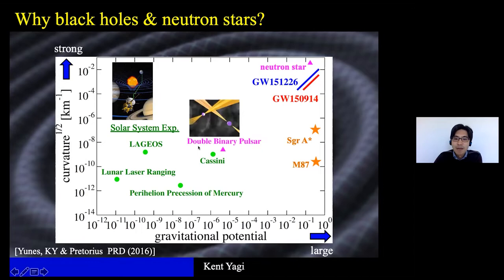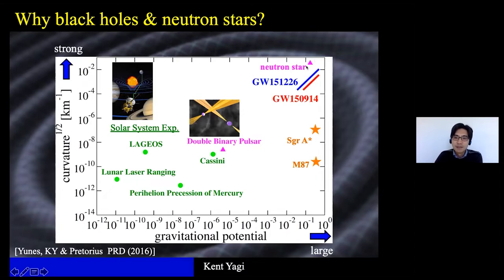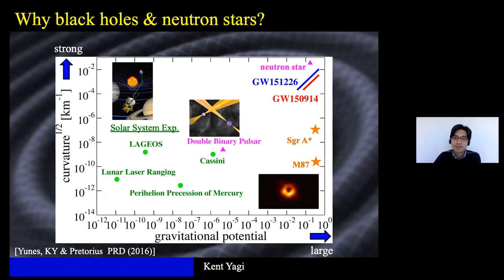On the other hand, we have binary pulsars, which also allow precision tests of GR. The system itself doesn't have large potential or large curvature — they are somewhat similar to the sun — but the interesting point is they consist of neutron stars. So there are some observables where we can extract information about strong gravitational aspects. We also have the Event Horizon Telescope taking the image of a supermassive black hole. These are supermassive, so the curvature is not so high, but since they are black holes the potential is close to one, allowing strong-field tests of gravity.